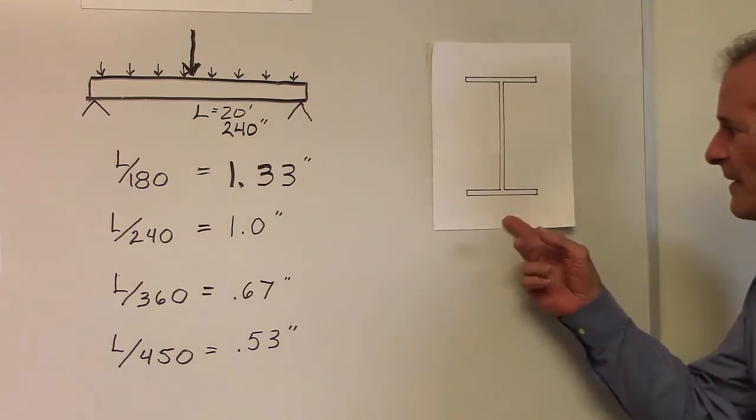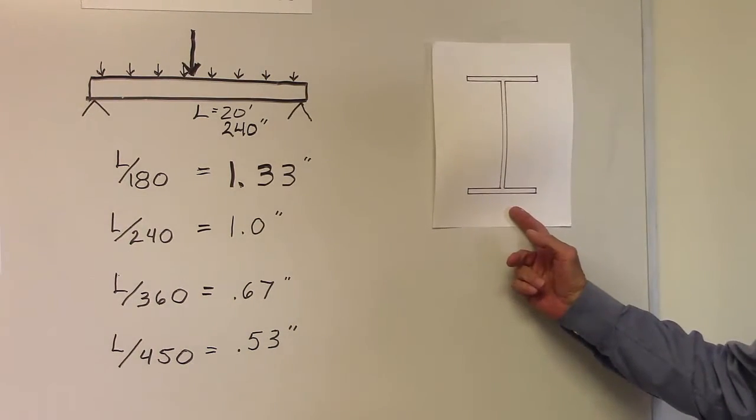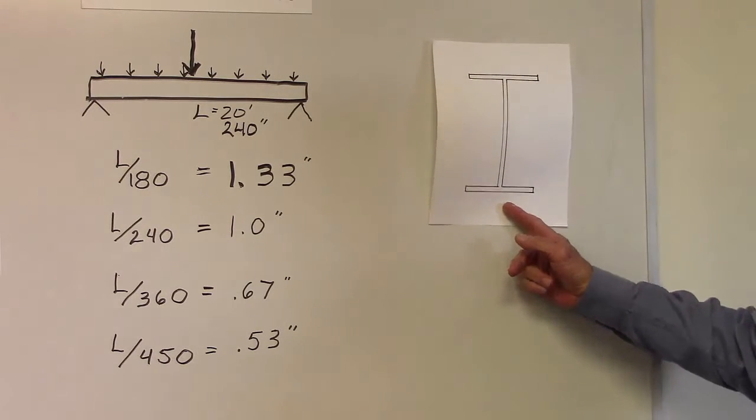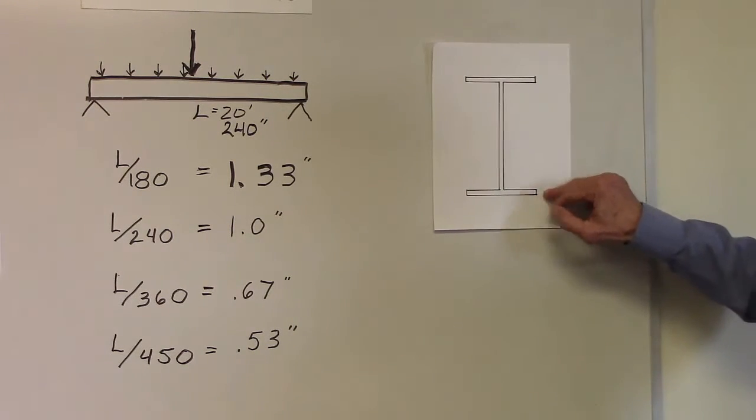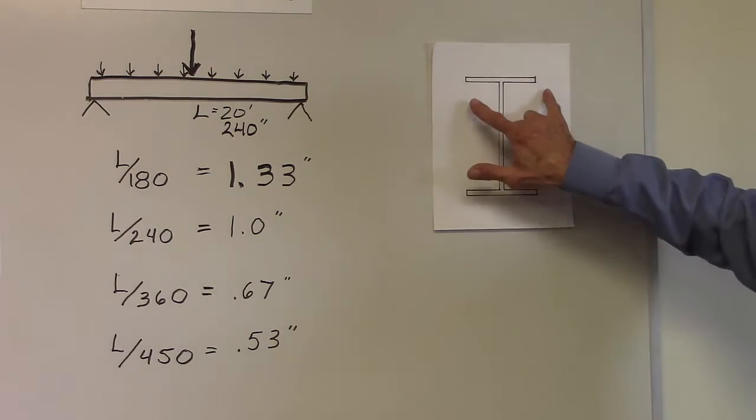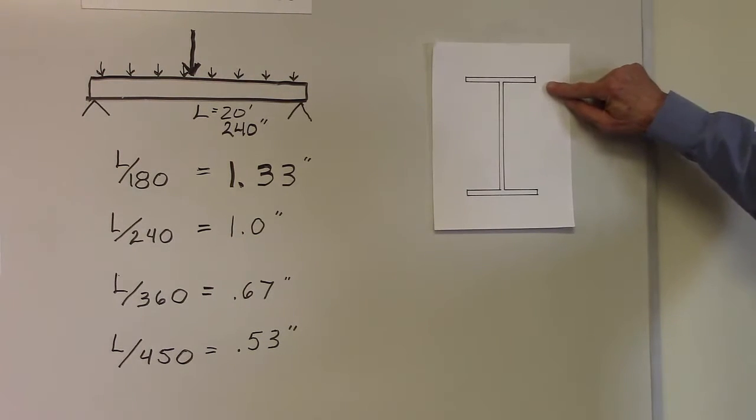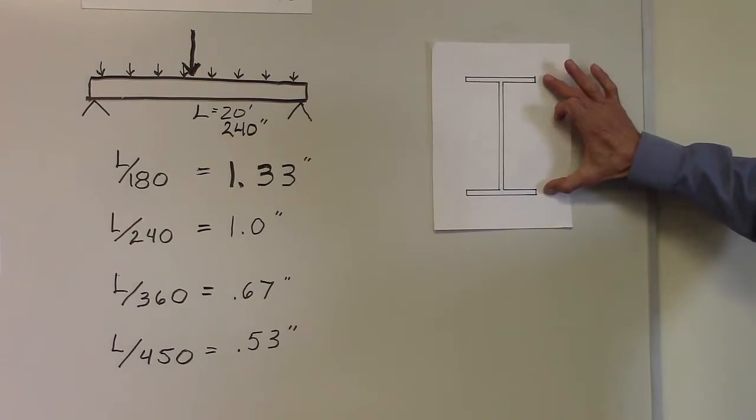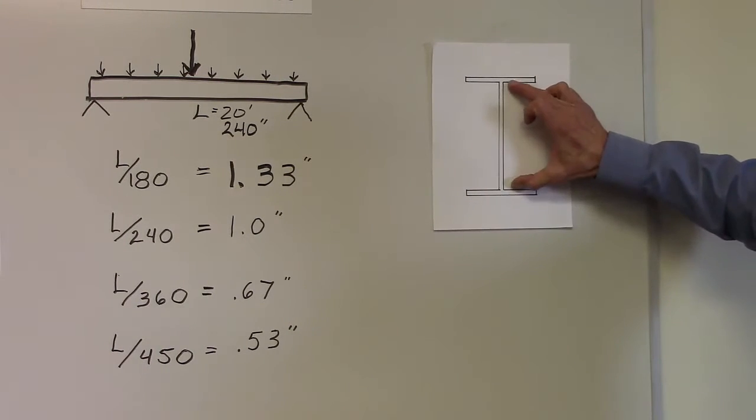As an example, here is a hot rolled I-beam. It's very simple. Your two flanges on the outside and your web on the inside. Your flanges were a certain width, a certain thickness. Your web was a certain thickness, a certain height.